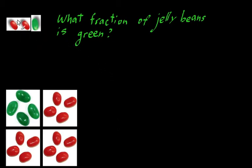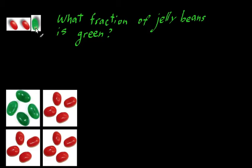The first problem: we have three jelly beans — one, two, three jelly beans. And the question is, what fraction of these jelly beans are green? The way to think about it is you want to first look at, of these three jelly beans, you notice that one of them is green — this one in particular is green. So let's draw an arrow to that one. We have one green jelly bean.